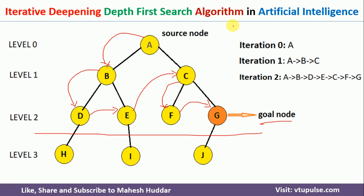This is the modified version of the Depth-Limited Search Algorithm. In Depth-Limited Search, we set one fixed limit and search for the goal only below that limit. I have discussed that algorithm in the previous video — do follow it to understand Depth-Limited Search in Artificial Intelligence.